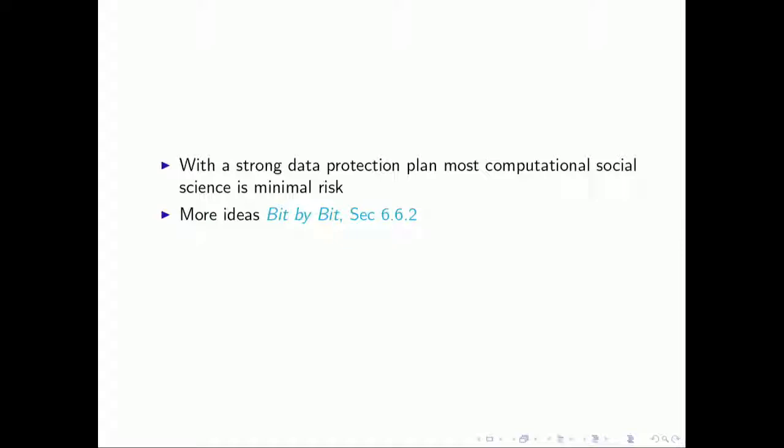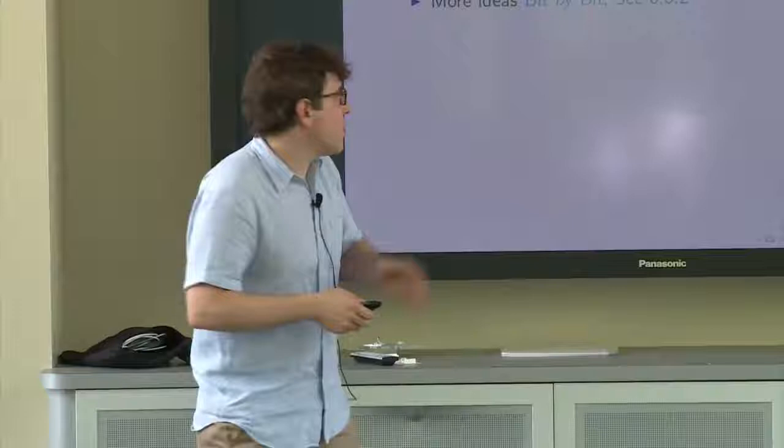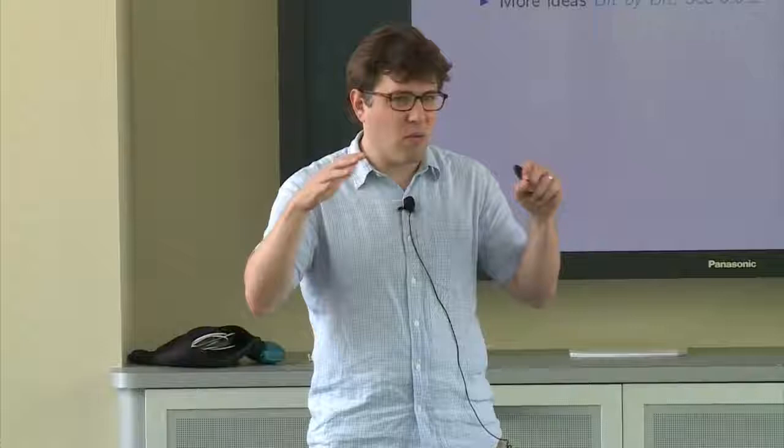So I think with strong data protection plans, most computational social science is minimal risk. And so there are more ideas about data protection in bit by bit. I want to say one thing about what minimal risk means. So this is a very important idea that means there's nothing that is risk-free. So like even for you to come here to this summer institute, there's risks. You got on an airplane, maybe you took a cab to get here. You walked from your dorm here and a tree could have fallen on you, right? There is nothing that is free of risk. And a lot of these very small risks are very hard to quantify. Like is that tree falling on us, is that like a one in a million thing or a one in a billion thing or a one in a trillion? I don't even, it's hard to know. And so for research ethics, we often have this benchmark minimal risk, which should be called kind of everyday risk. So is what you're doing riskier than the kinds of things people choose to do every day? And if it is not riskier than that, then that means we should think about that kind of research differently from research that sort of adds risks to the kinds of things that people do.